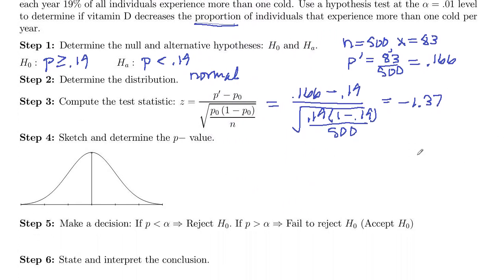So we need to then sketch and determine our p value. That negative 1.37 would be about right here on the distribution. The p value is the area past that. And this is a less than one-tailed test, so we only need that one side.